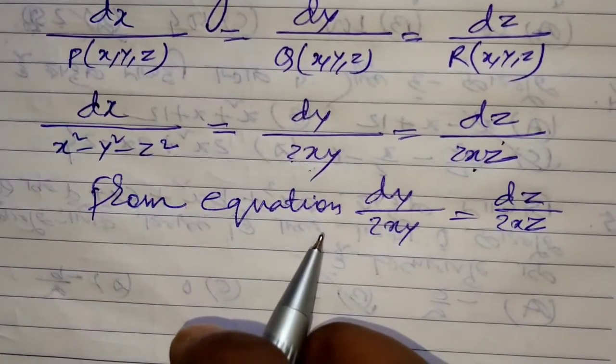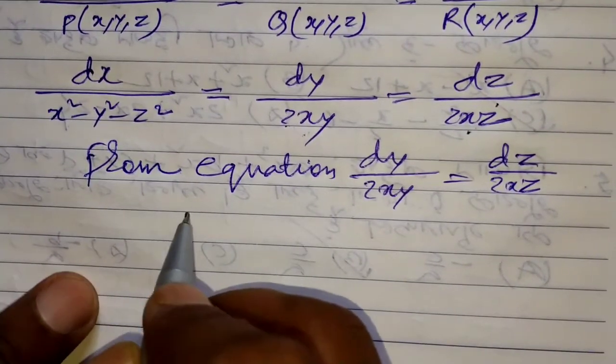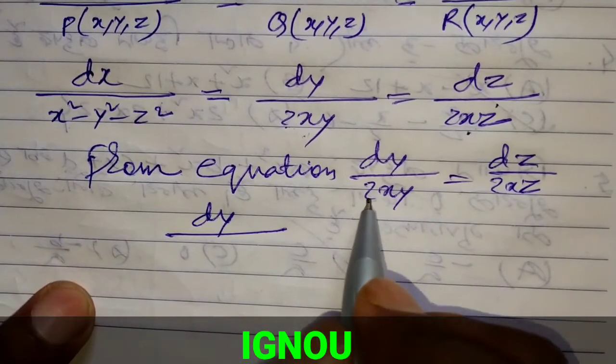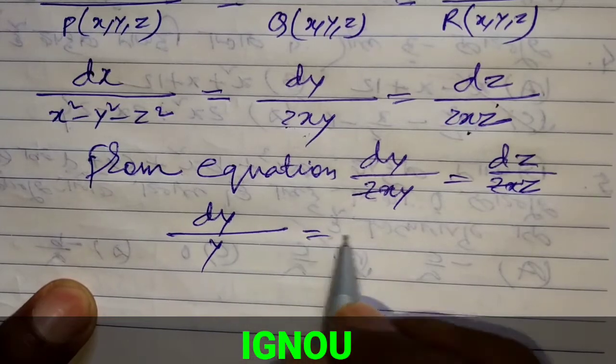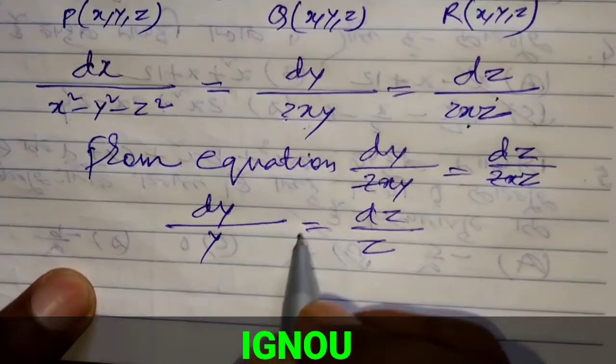dy/(2xy) = dz/(2xz). We can write this as: canceling 2x, we get dy/y = dz/z.